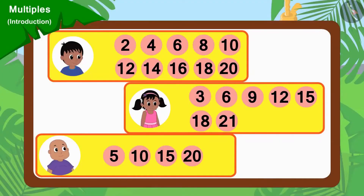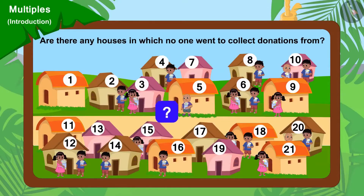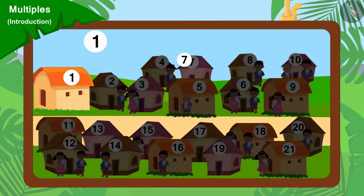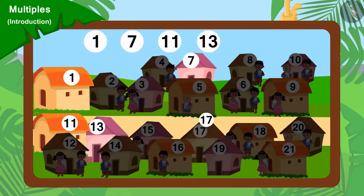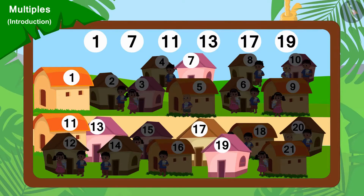Here, the numbers of the houses from where Raju, Pinky and Bablu went to collect donations are written. Are there any houses in which no one went to collect donations from? You can stop the video and find the answer. Yes, house numbers 1, 7, 11, 13, 17 and 19 are the houses in which nobody went to collect donations from.